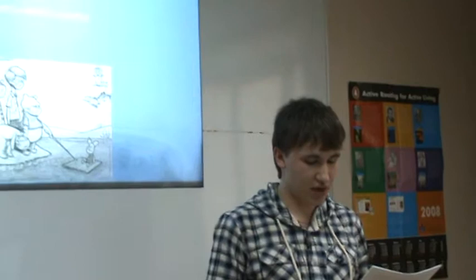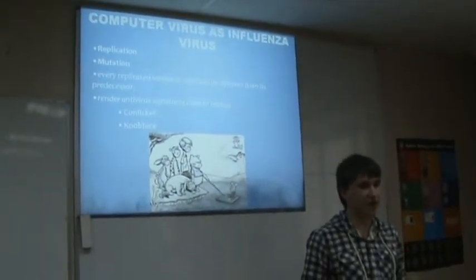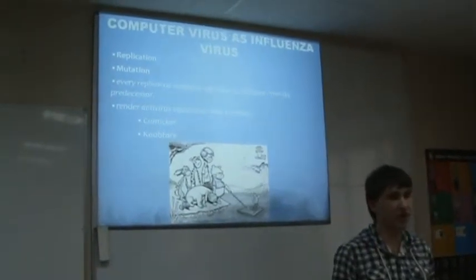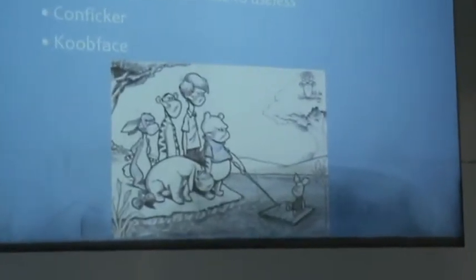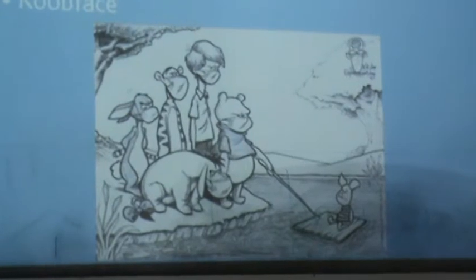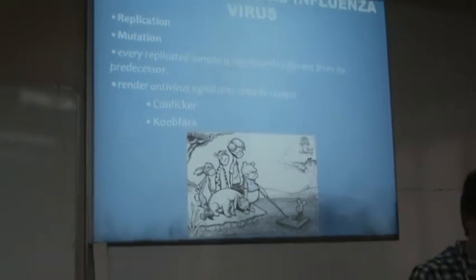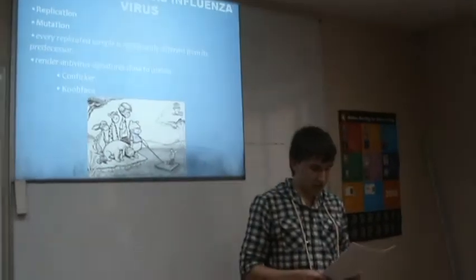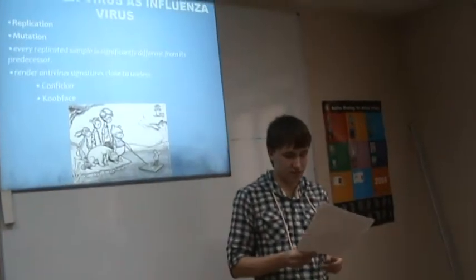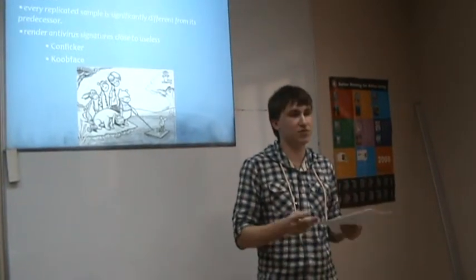Biological viruses such as the influenza virus are also known to change upon replication — when viruses replicate, they mutate themselves. This behavior is comparable to the way polymorphic and metamorphic viruses work. It's a real nightmare for security analysts because every replicated sample is significantly different from its predecessor, which can render antivirus signatures designed to detect malicious programs close to useless.